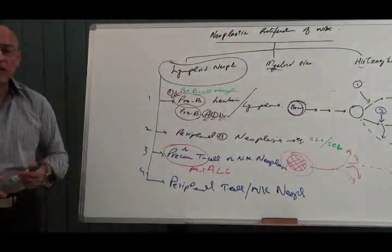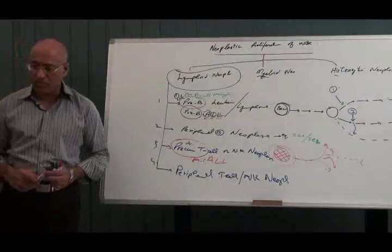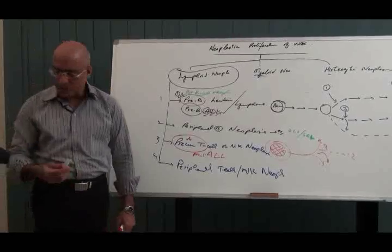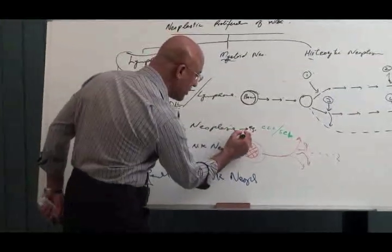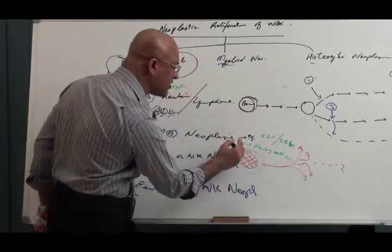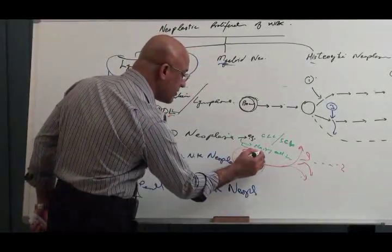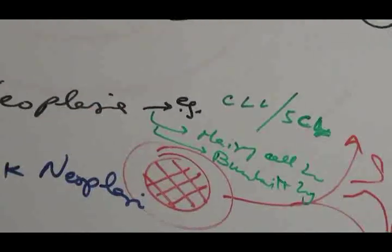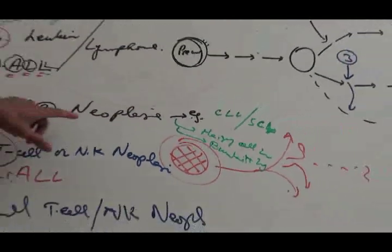But then there are some more dangerous examples like hairy cell leukemia and Burkitt lymphoma. There are many examples of this. Hairy cell leukemia - I will discuss these in detail later. Or there can be Burkitt lymphoma. Now why are these three categories put under peripheral B cell neoplasia?